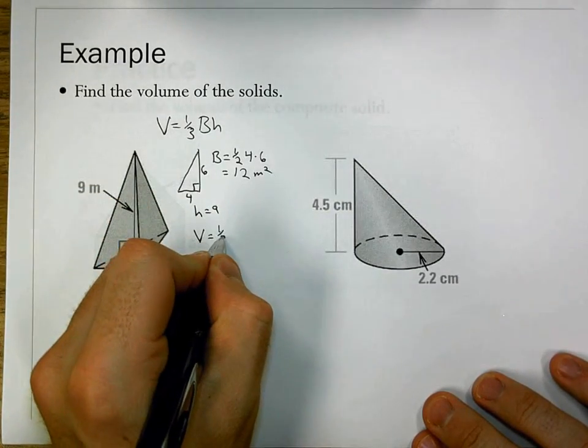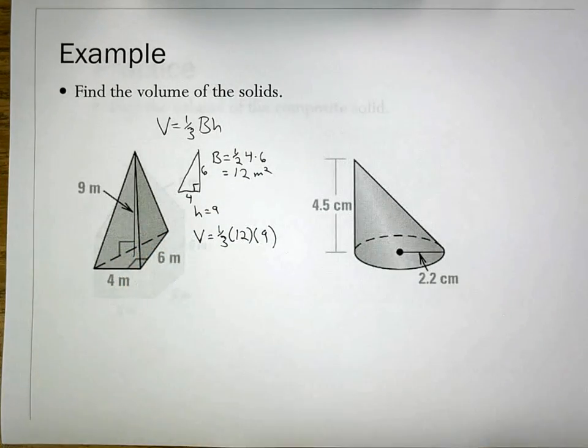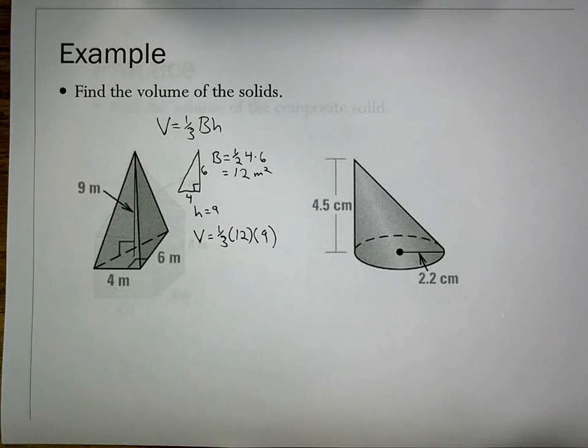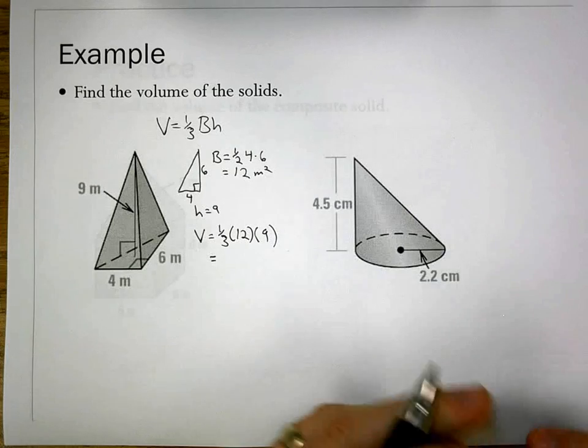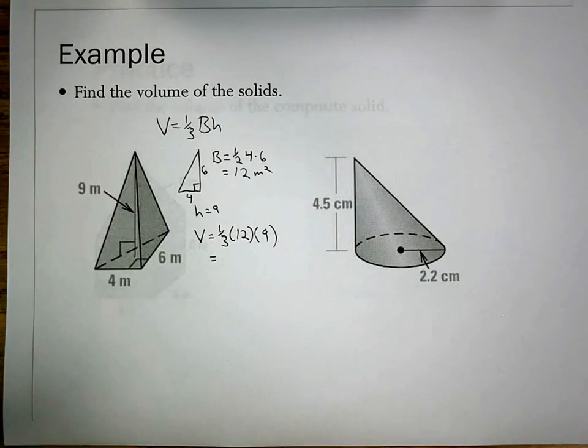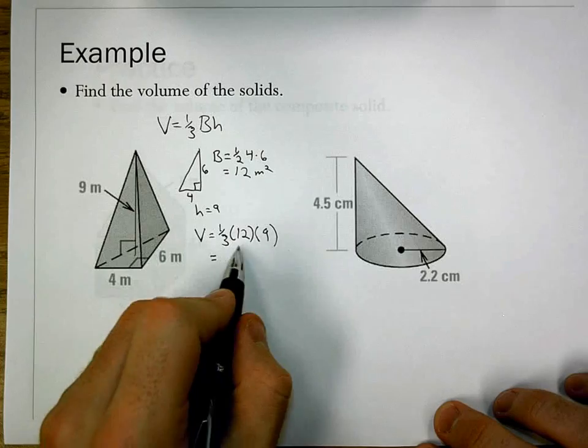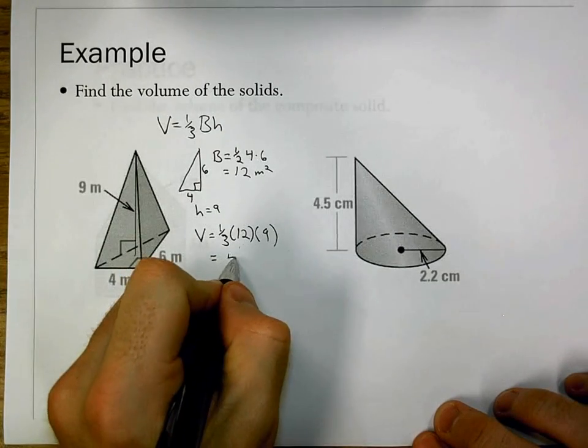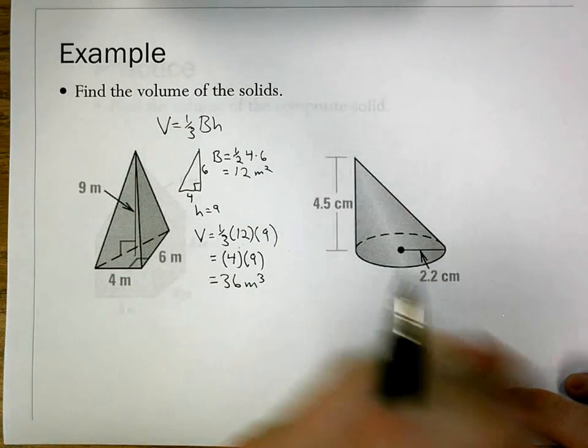We can now substitute in. We get one-third times 12 times 9. If we get a value that's divisible by three, we're going to divide that by three so we can get rid of the one-third. I'm going to divide 12 by three, and that's four. So these are four times nine or 36 meters cubed.